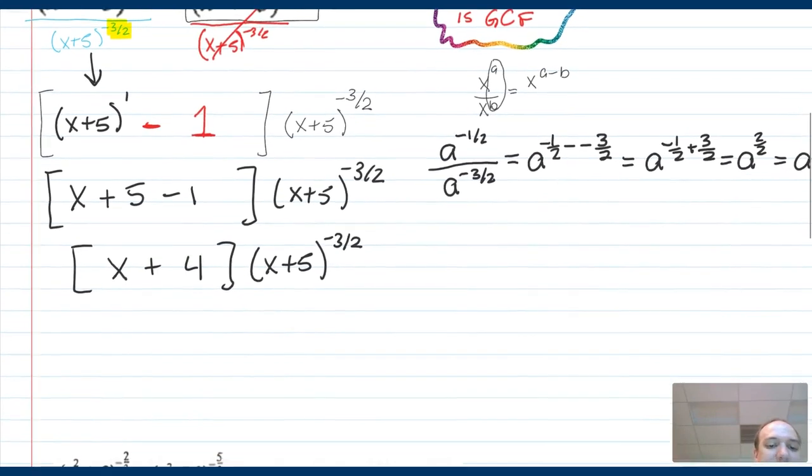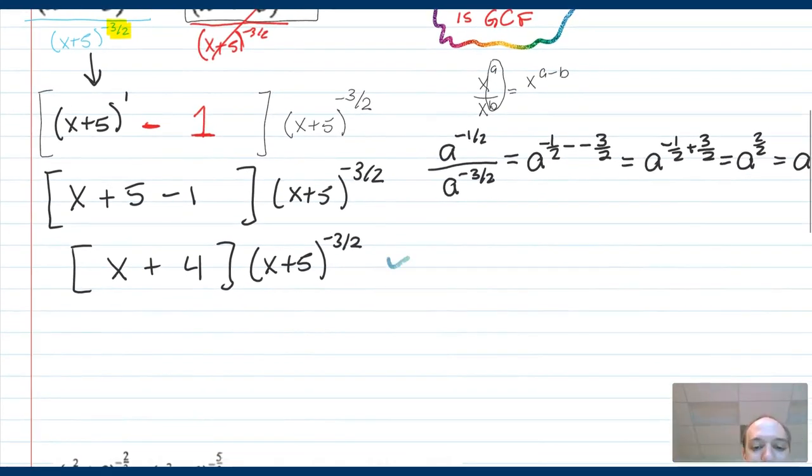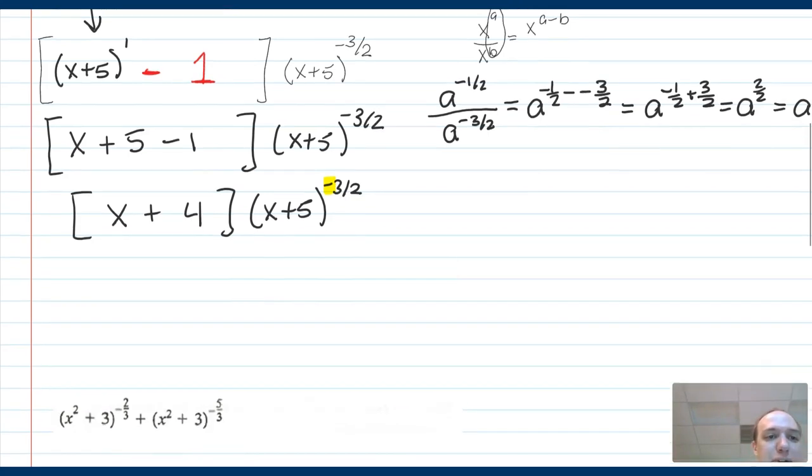When you have a negative exponent, this is fine. You've technically accomplished factoring, but it's not really polite. For our class, we're going to consider negative exponents to be impolite. We also know that we could write negative exponents on the bottom of a fraction. So for a final version of this, I would actually write it as x plus four over x plus five to the positive three halves as a final form answer.